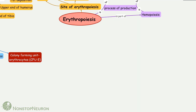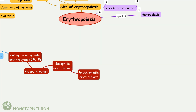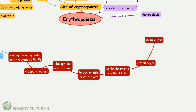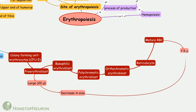Colony-forming unit erythrocytes produces mature RBCs after passing through several stages. These stages are: proerythroblast, basophilic erythroblast, polychromatic erythroblast, orthochromatic erythroblast, reticulocyte, and finally mature RBC. The cells undergo changes as they grow. For example, the size of the proerythroblast is about 20 microns in diameter. Throughout the growth, the cells decrease in size and mature RBCs are about 7.5 microns.